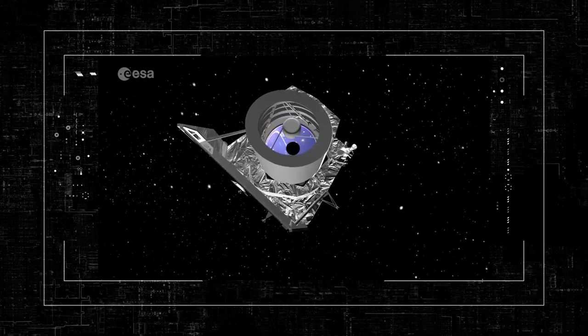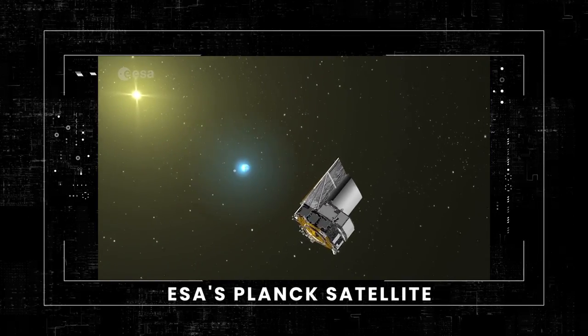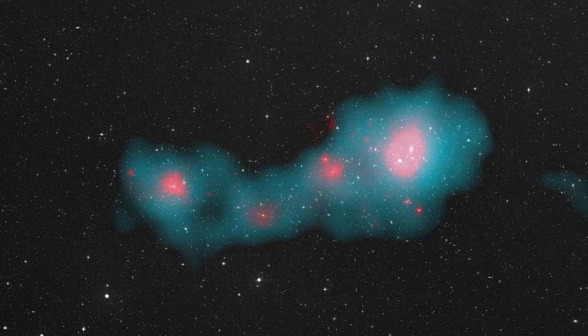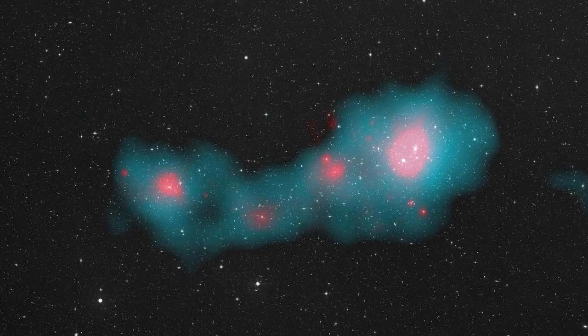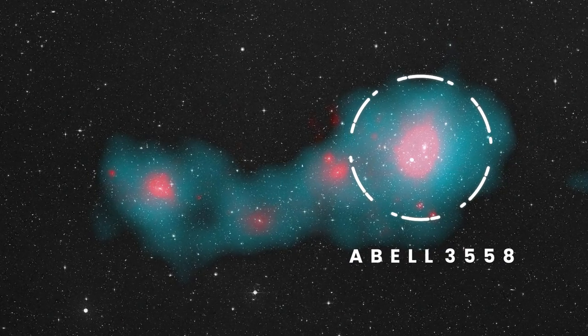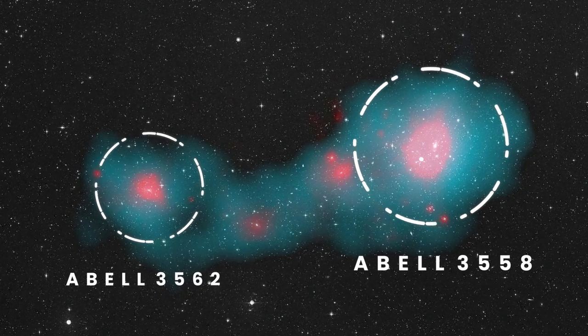Scanning the sky for the oldest cosmic light, ESA's Planck satellite has already taken unique images of the central part of the Shapley supercluster. The largest pink spots show the two clusters of galaxies Abell 3558 on the right and Abell 3562 on the left, as well as a couple of smaller groups between them.